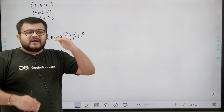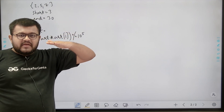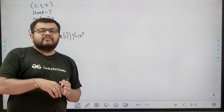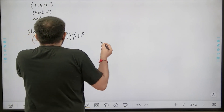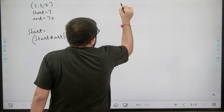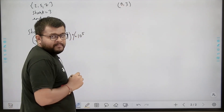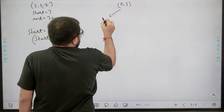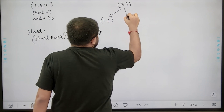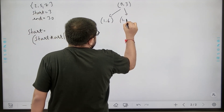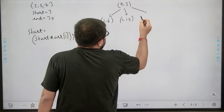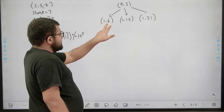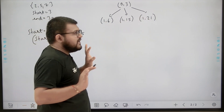We can generate all elements possible after one operation, then all possible numbers after two operations, three operations, and so on — until we reach end. As soon as we get the value end, we check how many operations were performed. We are traversing level by level, so the first time we reach end is the minimum number of steps.